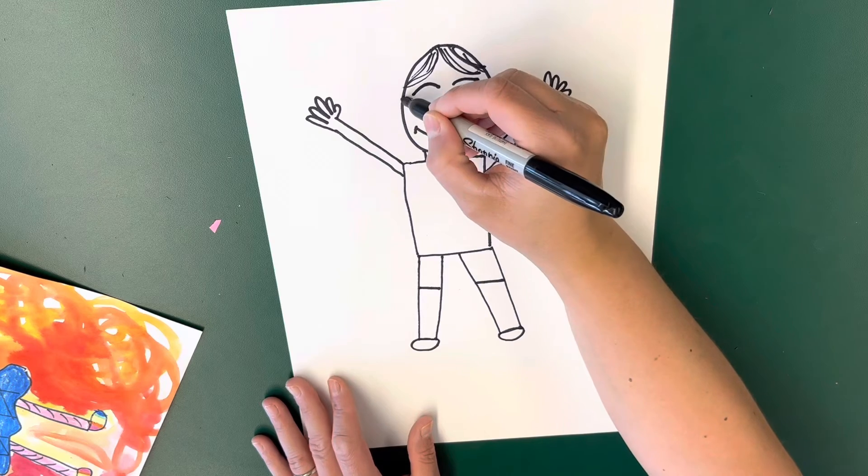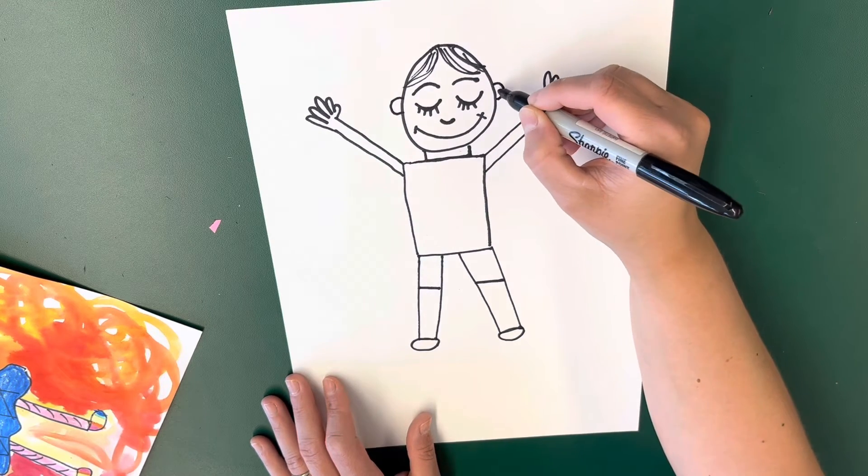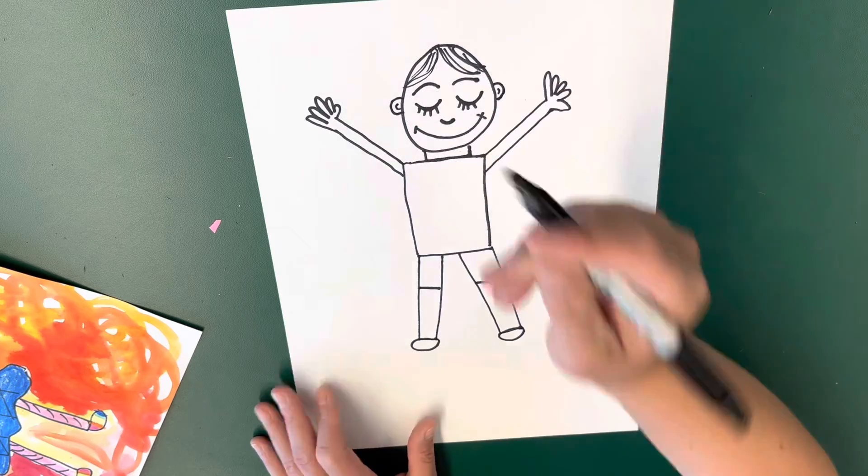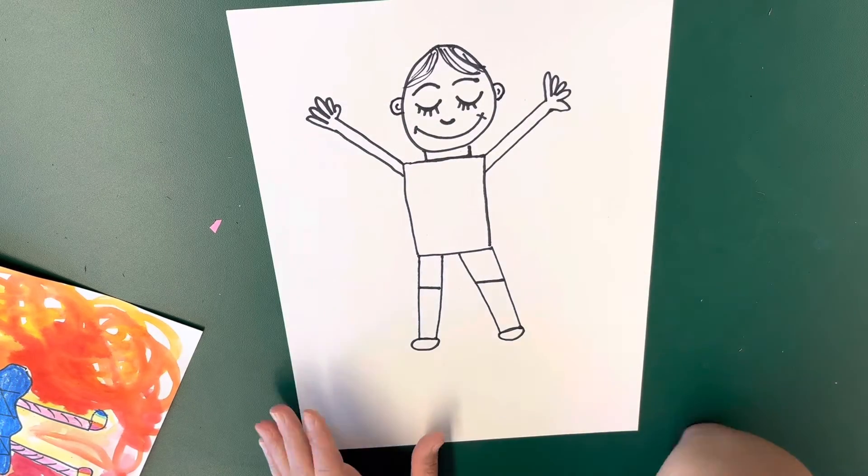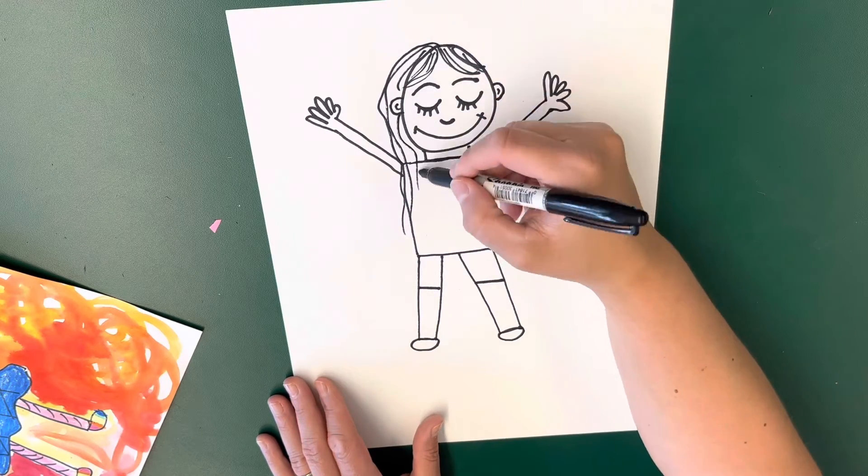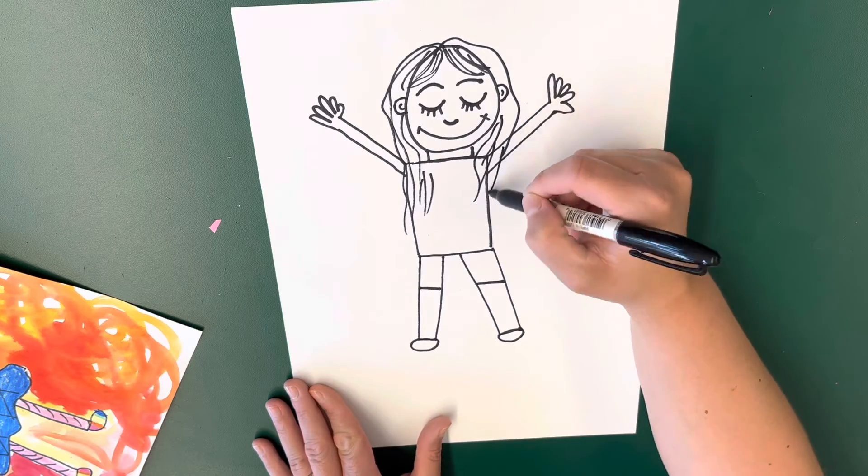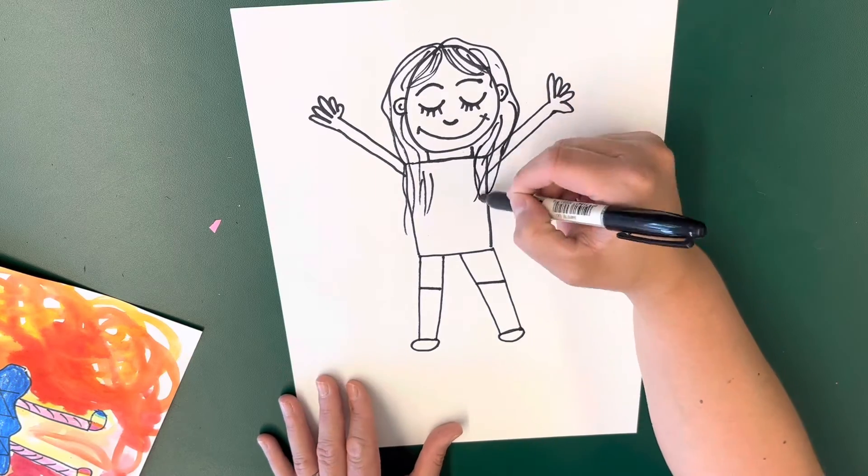We're going to draw some ears too. You're going to do some C shapes on each side of the head with another little curve on the inside. And then think about the length of your hair. Mrs. Plummer's hair is pretty long, so I am going to draw my hair the length it is. It's got a little bit of a wave to it but it's not too curly.